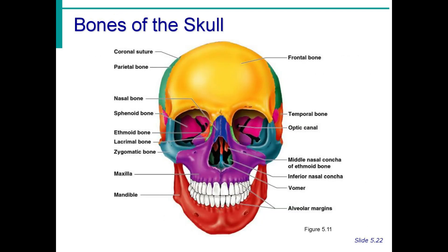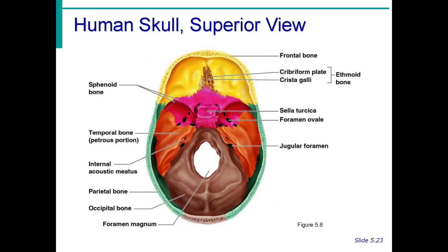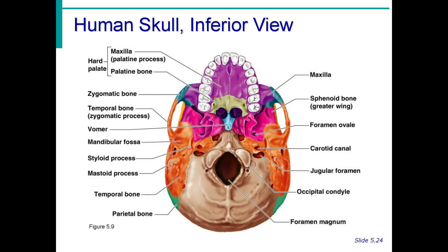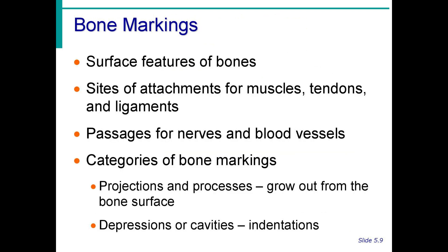The sphenoid bone is a butterfly-shaped bone that forms part of the interior floor and sides of the cranium, while the ethmoid bone forms the middle portion of the anterior cranial floor, extending inferiorly between the eye orbits. You need to memorize all the parts and their functions — mnemonics can help. There is also a long list of bone markings in your laboratory book to help with categorizing and memorizing their meanings.